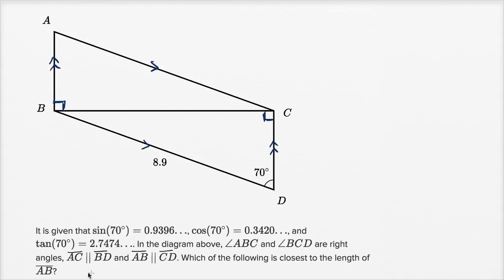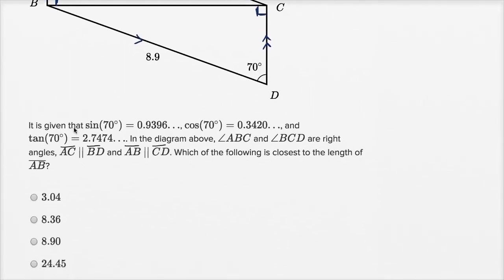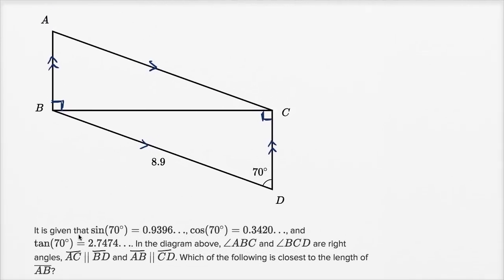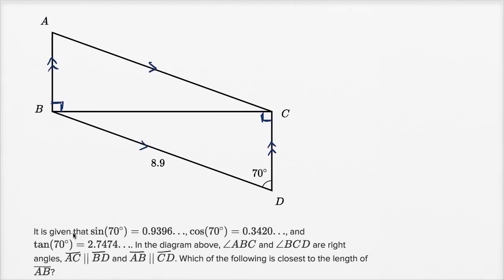Which of the following is closest to the length of AB? They give us some choices. We have a 70 degree angle here, and they've given us the sine, cosine, and tangent of 70 degrees. So it feels like we should be able to use that.